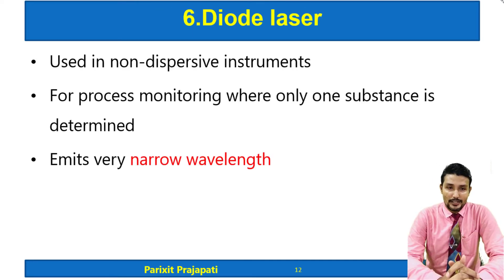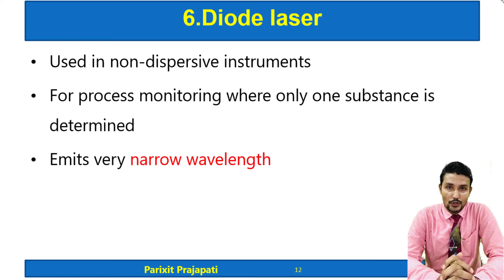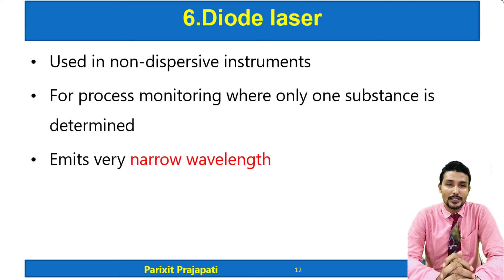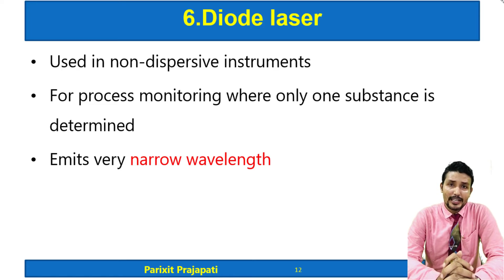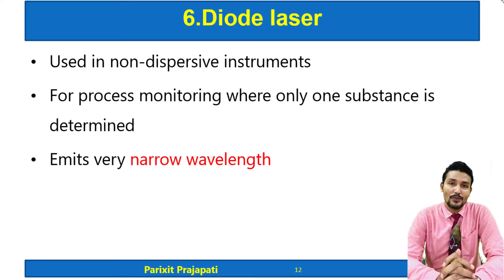The diode laser source is used in non-dispersive instruments. There are two types of instruments: dispersive and non-dispersive. Non-dispersive instruments use diode laser sources, which are used for process monitoring of a single component or substance. The full range is not required, so the diode laser gives IR radiation in a very narrow wavelength.